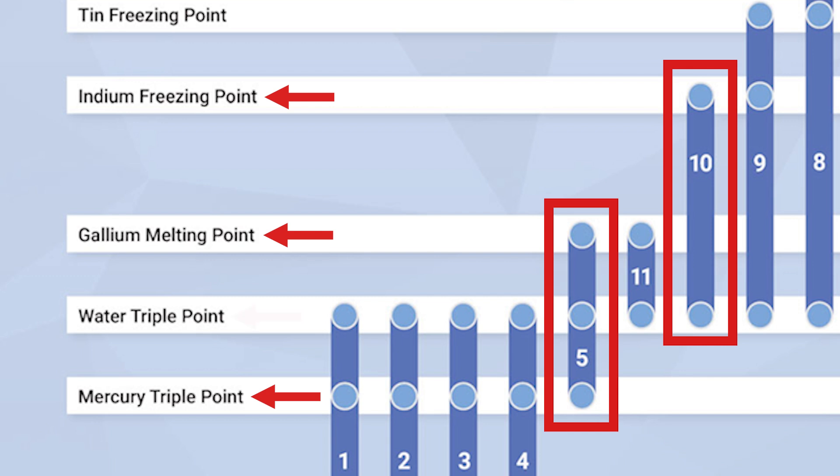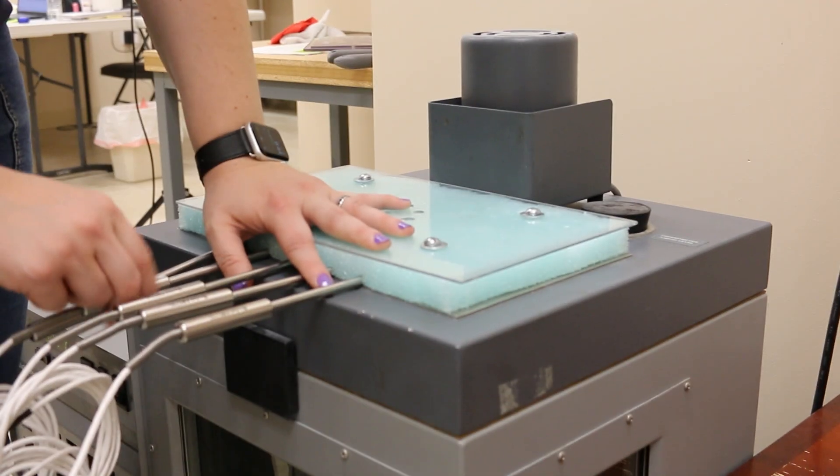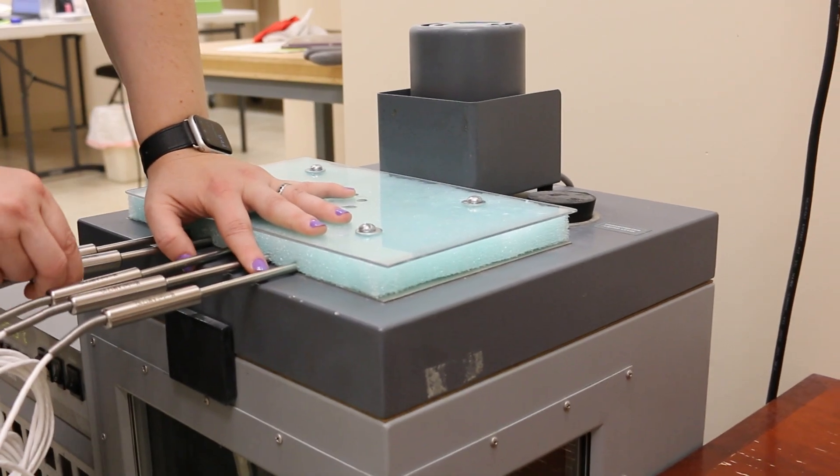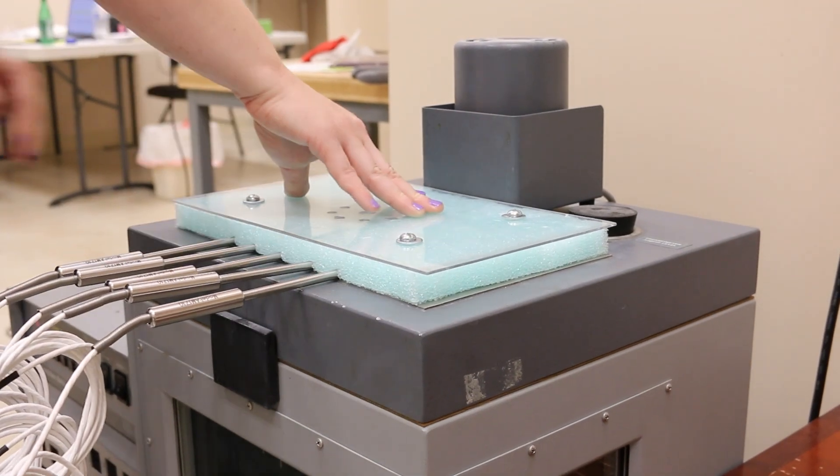With exception to the triple point of water, all of these points will be measured with a comparison calibration. Comparison calibrations are used to test probes across ITS-90 subranges without having to realize intrinsic standard points, which often require expensive equipment.